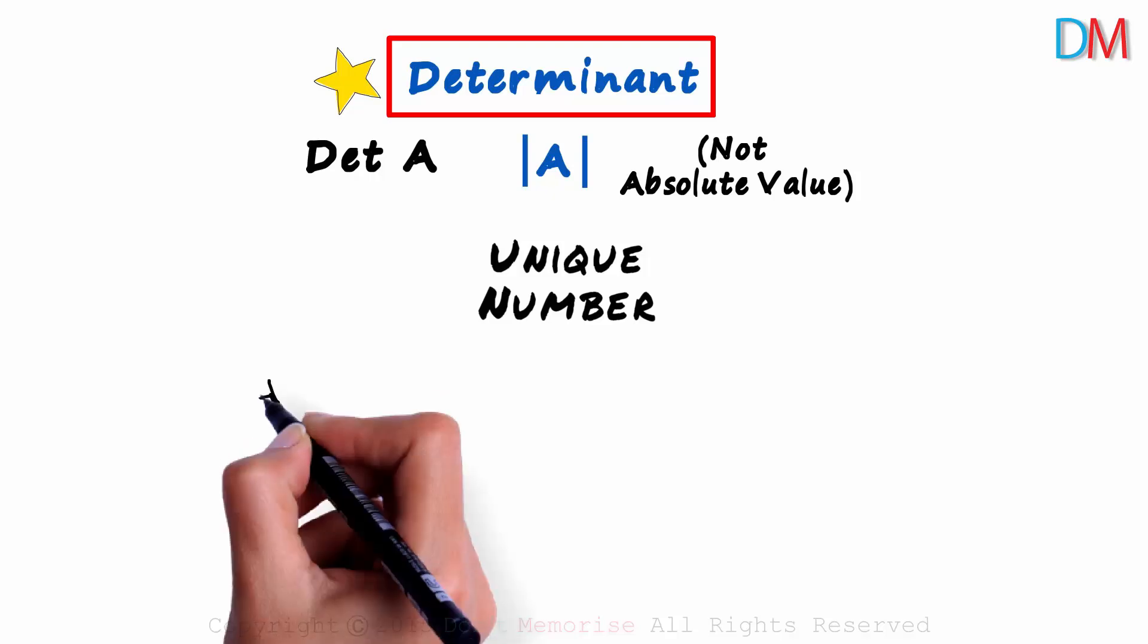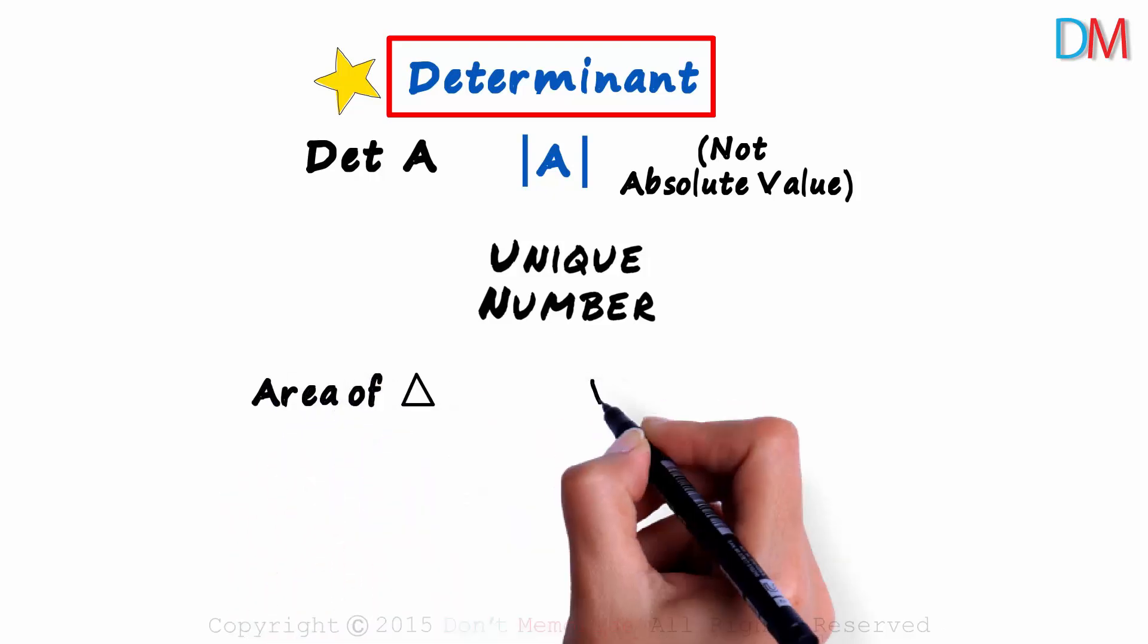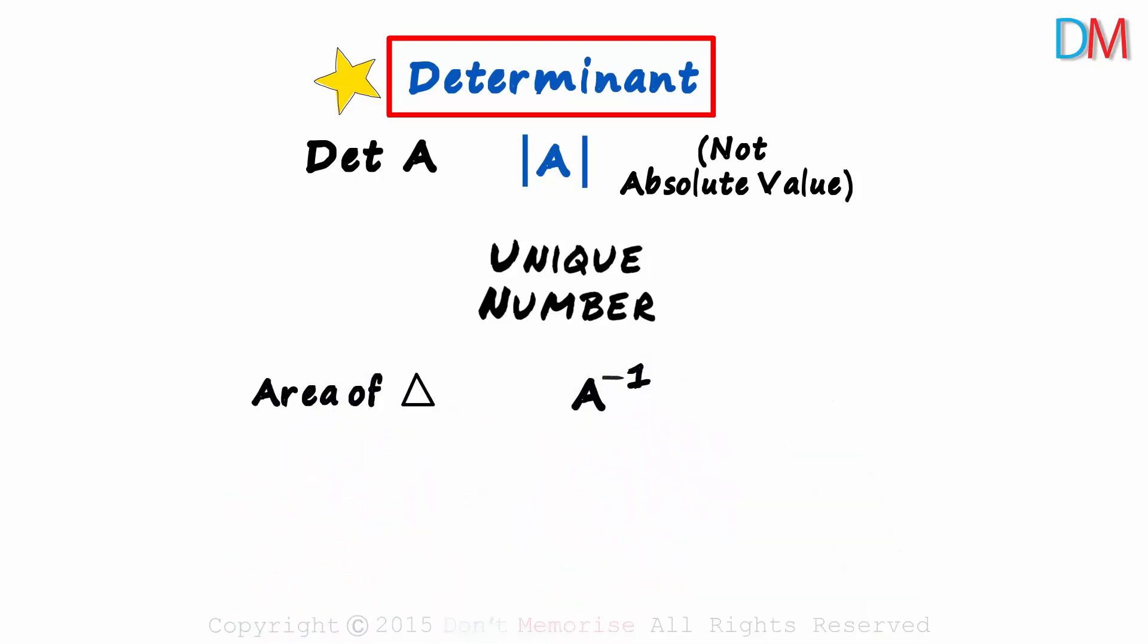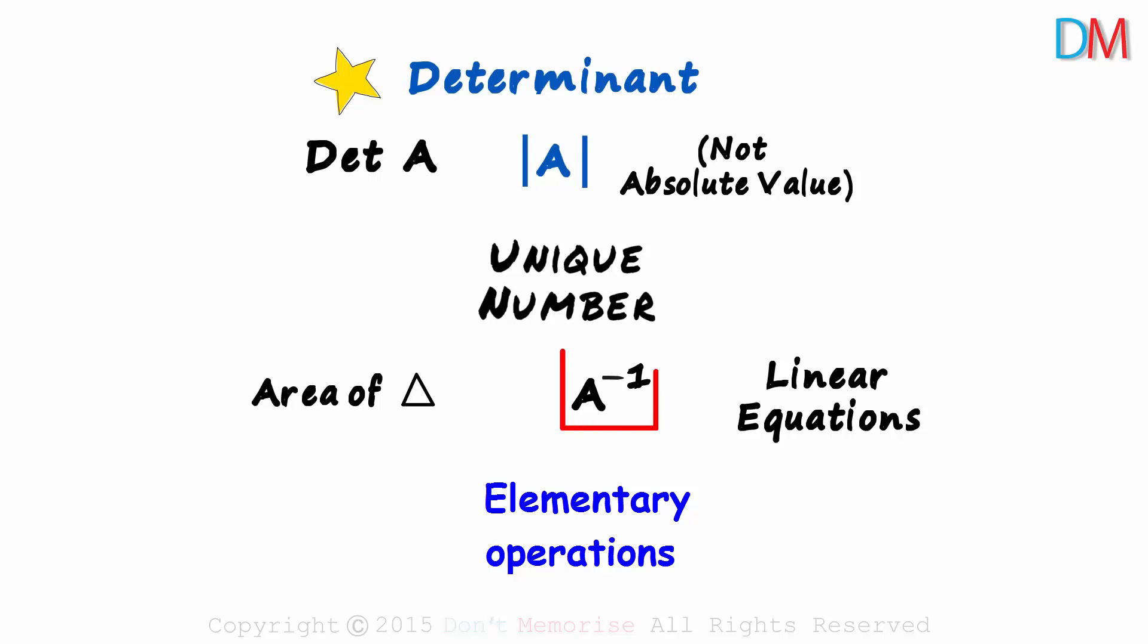We can use it to find the area of a triangle, the inverse of a matrix, or even to solve linear equations. If you remember, we had used elementary operations to solve for the inverse of a matrix and the procedure was super lengthy. And determinants make it super easy.